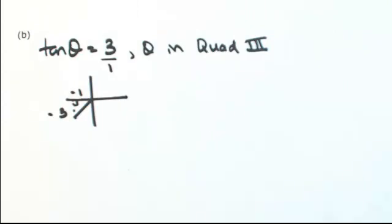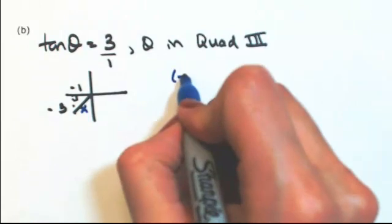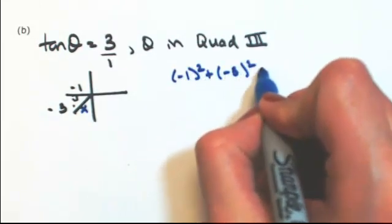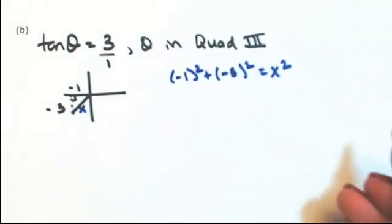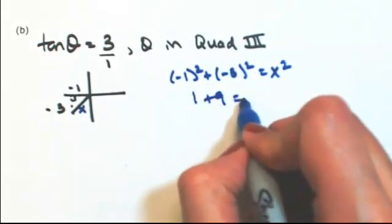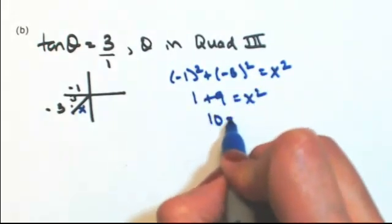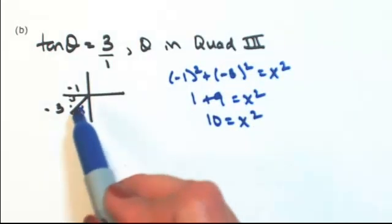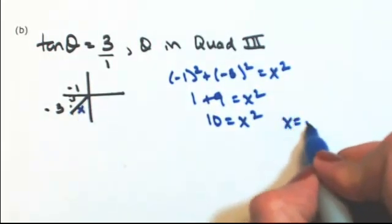So then this missing side, I'm going to call it x. So negative 1 squared plus negative 3 squared is x squared. So 1 plus 9 is x squared. So that means that x is positive because it's the hypotenuse, square root of 10.